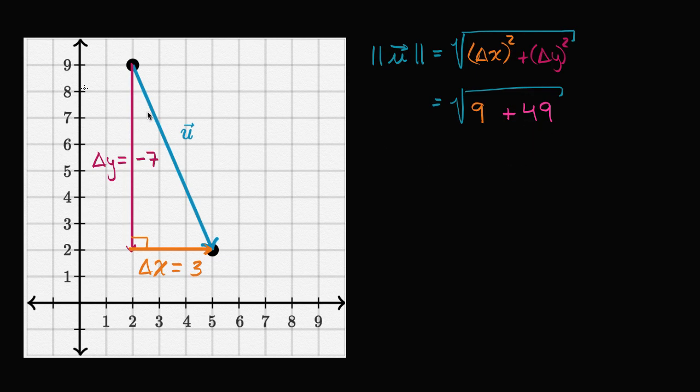Either way, the magnitude of our vector equals the square root of nine plus 49, which is 57. I don't think I can simplify this radical too much. So the magnitude of this vector is the square root of 57.